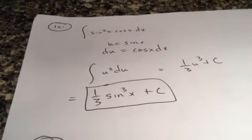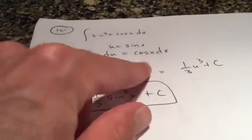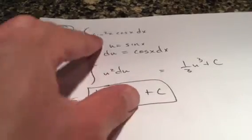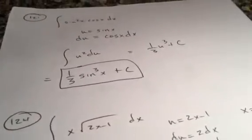Let u be sine x. And then, as Grace pointed out to us last week, very good. This is just going to be, well, first off, du is cosine x dx. So this would be u squared. 1 power up divided by that new power. And then plug sine x in for u. Pretty easy one.